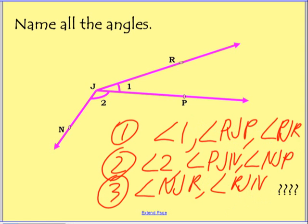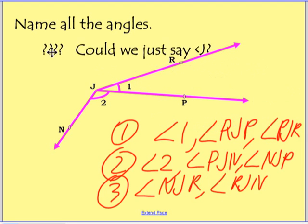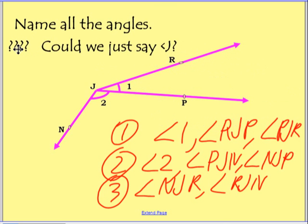Notice I cannot, if you're wondering, could we just say angle J? And of course the answer is no, because J is the vertex of three different angles. And so angle J would be ambiguous. We wouldn't know what it meant. Okay. Moving on.